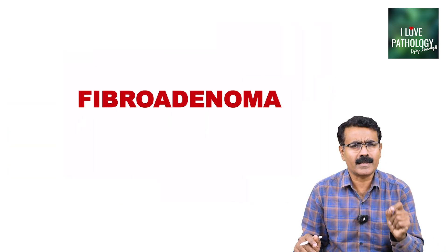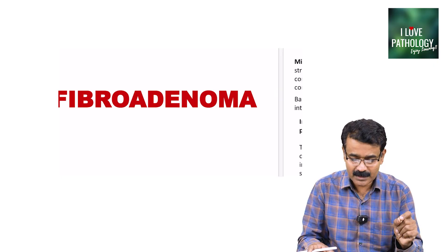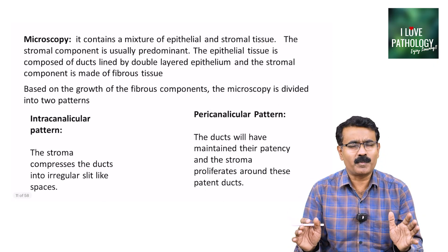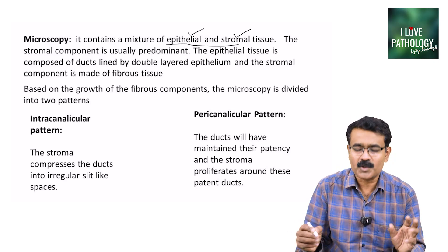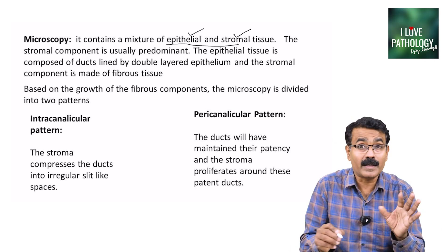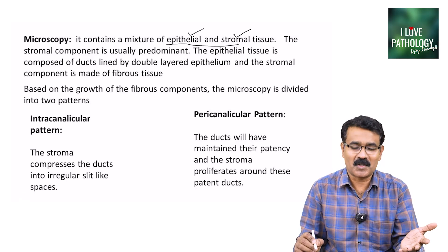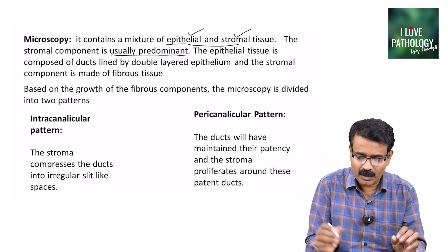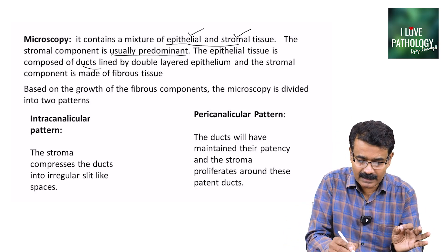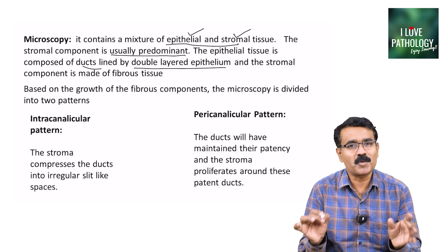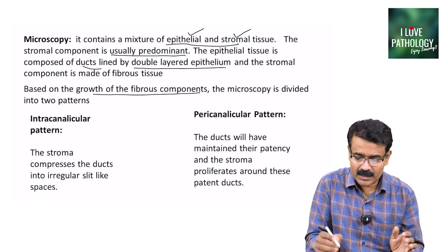The next important slide is fibroadenoma of the breast. Microscopically it is very simple — it contains a mixture of two components: epithelial and stromal tissue. The stromal tissue forms the 'fibro' part and the epithelial tissue forms the 'adenoma' part. The stromal component is usually predominant, and the epithelial component is composed of ducts lined by double-layered epithelium.